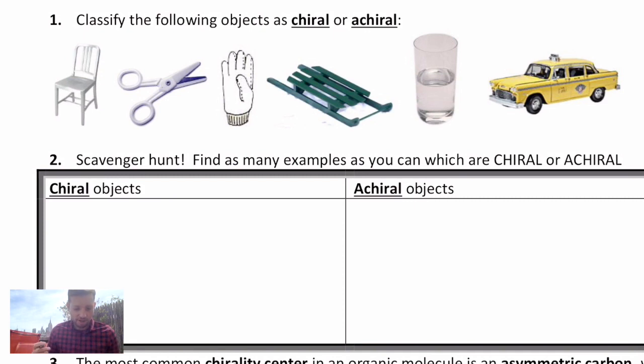So for example, that chair is an achiral object. It would be identical to its mirror image and it has a plane of symmetry running right down the middle of it. As opposed to a pair of scissors, those are chiral. Those are handed. Anybody that's left-handed knows that scissors are designed for one type of user as opposed to the other.